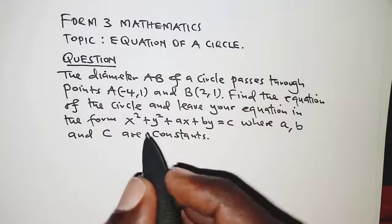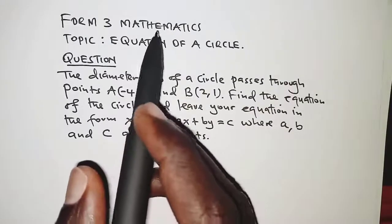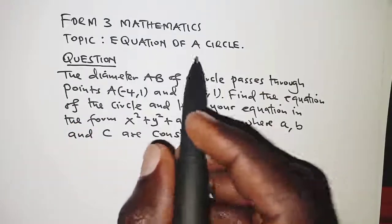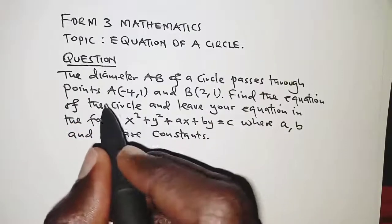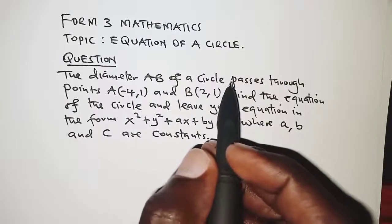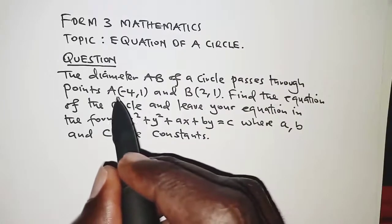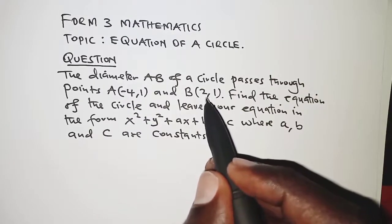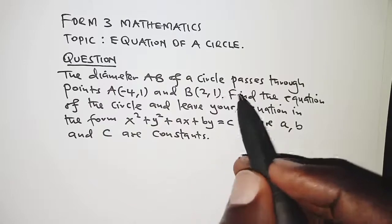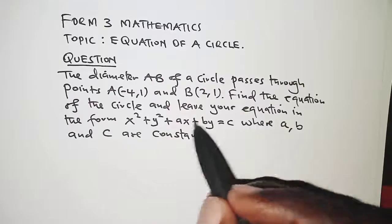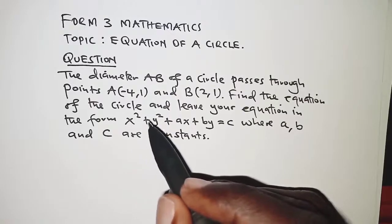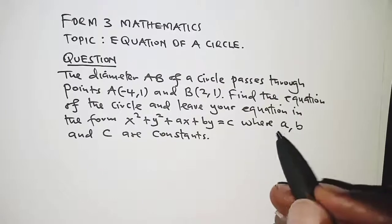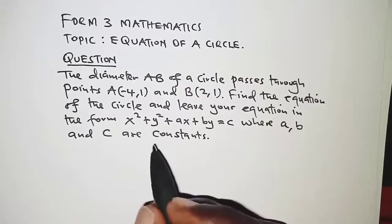Welcome. This is Form 3 mathematics and the topic today is on the equation of a circle. The question reads: the diameter AB of a circle passes through point A, which is negative 4, 1, and point B, 2, 1. Find the equation of the circle and leave the equation in the form x squared plus y squared plus ax plus by equals c, where a, b and c are constants.